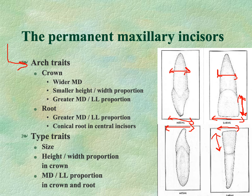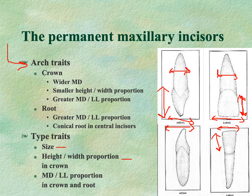The type trait distinguishes central from lateral incisors: differences include size, height-to-width proportion of the crown — measured from the cervical line to the incisal edge — and the mesiodistal to labiolingual proportion in both crown and root.